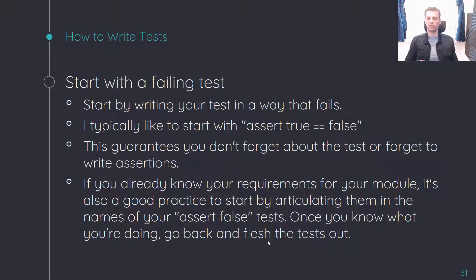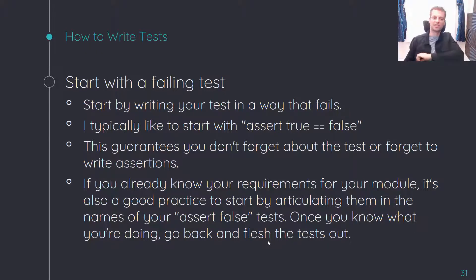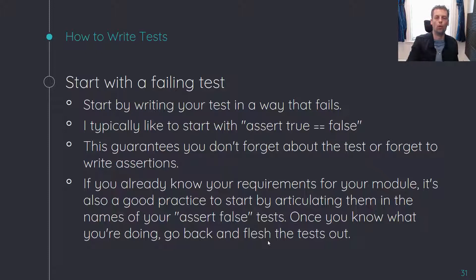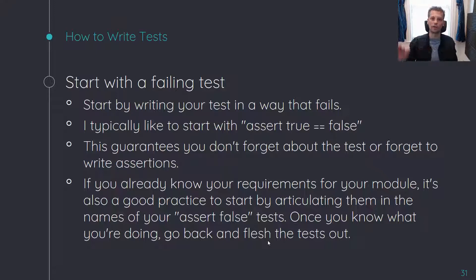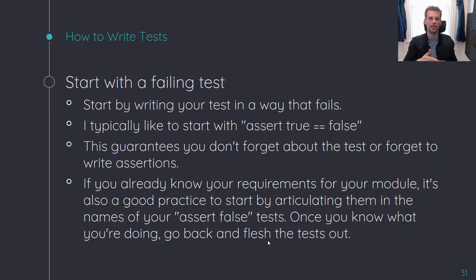Always start with a failing test. What I like to do is write my test and then immediately put 'assert true equals false' or 'expect true to be false' — just something that is going to make the test fail. This guarantees I don't forget about the test, because otherwise you start writing tests, start writing code, and forget you needed to finish those tests. This guarantees you come back to them. If I already know my requirements or constraints on a particular module, I like to articulate those constraints in the name of the test and then put an assert true equals false inside it. That way I have clarified in my own mind what I'm trying to accomplish. Then once I have an idea of how I'll implement the code, I go back, finish the test giving it its power to pass when working and fail when not, and then finish the actual code.